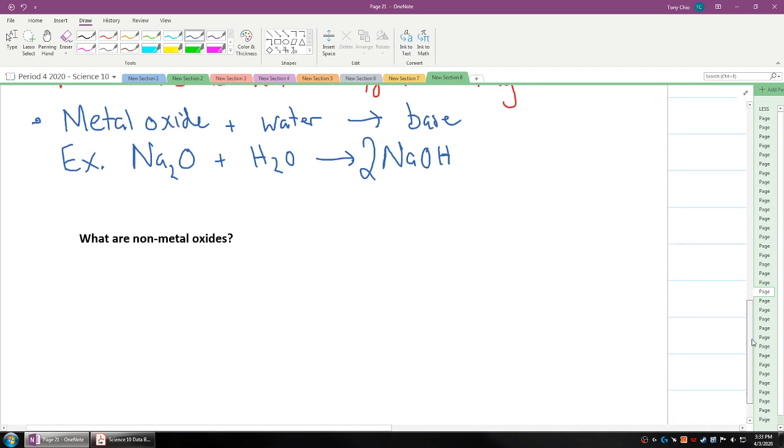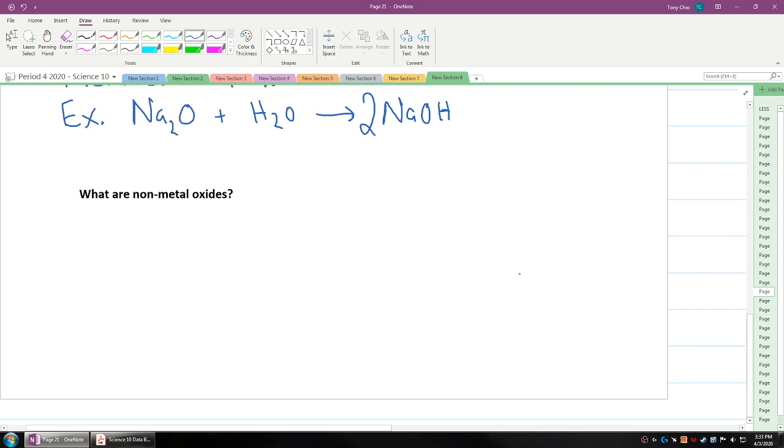But what about non-metal oxides? Non-metal oxides basically means when a non-metal reacts with oxygen. So in this case, it could form, for example, SO2. Now, when this non-metal oxide reacts with water, so we know that metal oxides when it reacts with water forms a base. Non-metal oxide plus water will form an acid.